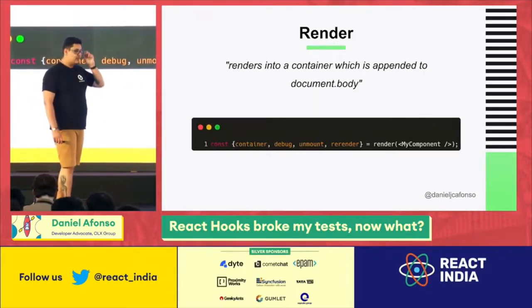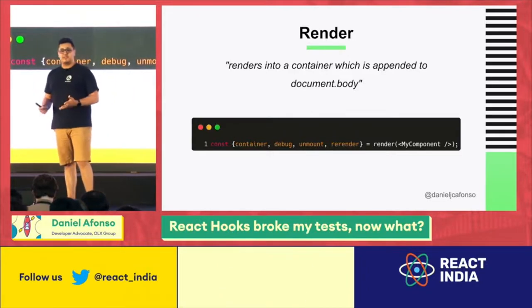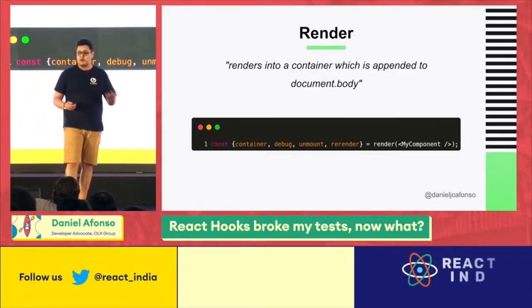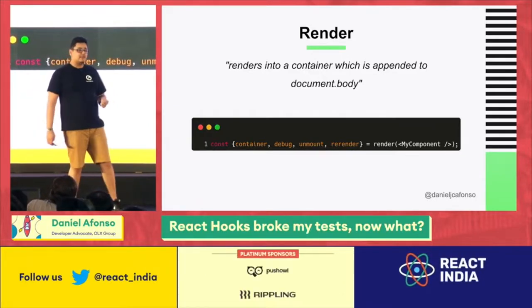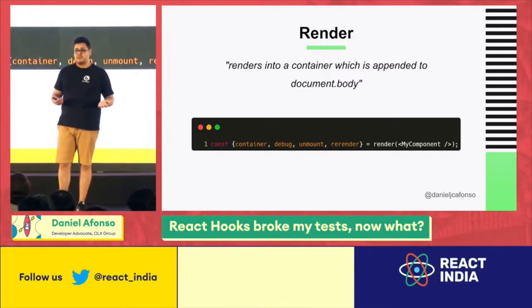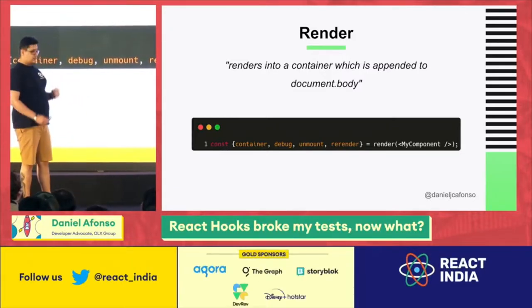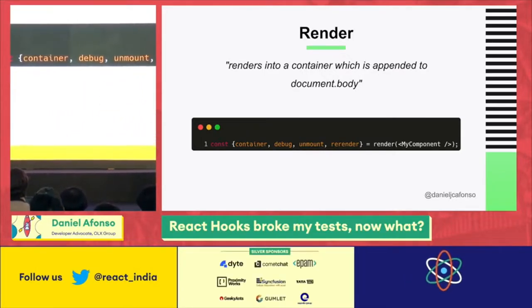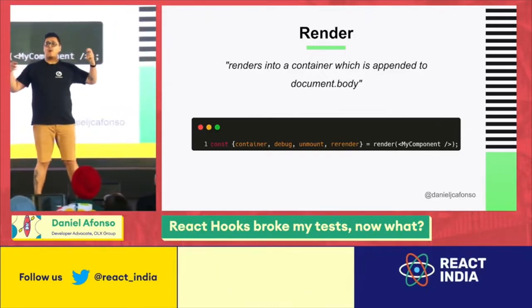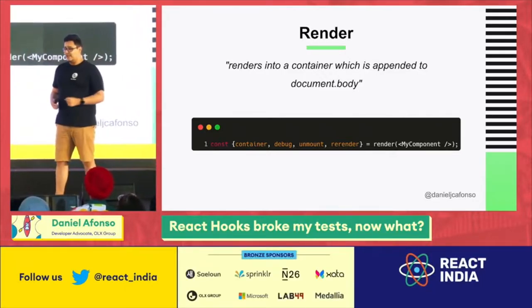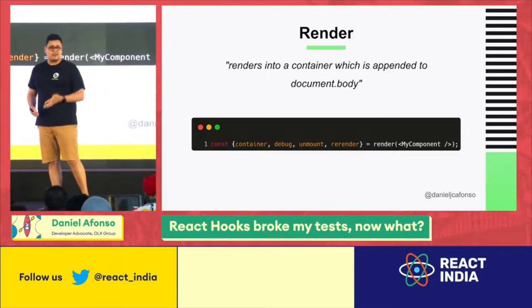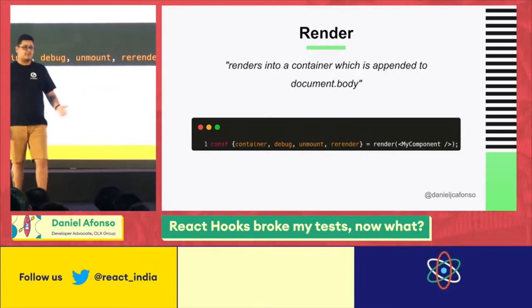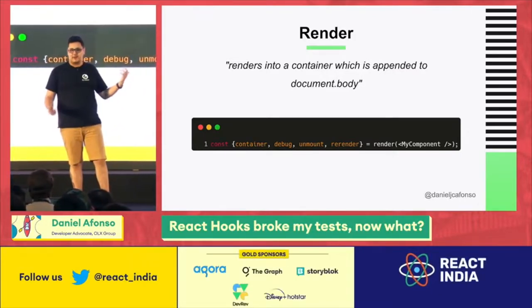Render is a function that will pick up your component, render it into a container, and this container will be appended to a document body. Besides doing this, the function also gives you utilities: the container where your component was rendered, a debug function to check the state of your component, and functions like unmount to trigger unmount events and re-render to trigger re-render events. This is the first step you'll probably do when writing a test.